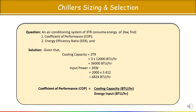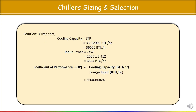To calculate COP, the formula is: COP = Cooling Capacity (BTU/hr) ÷ Energy Input (BTU/hr). Substituting the values, you get a COP of 5.27. The greater the value of COP, the better for the machine. So from a manufacturer catalogue, if you get 5.27, it's better to select a chiller with 5.5 if available, since higher COP means better efficiency.